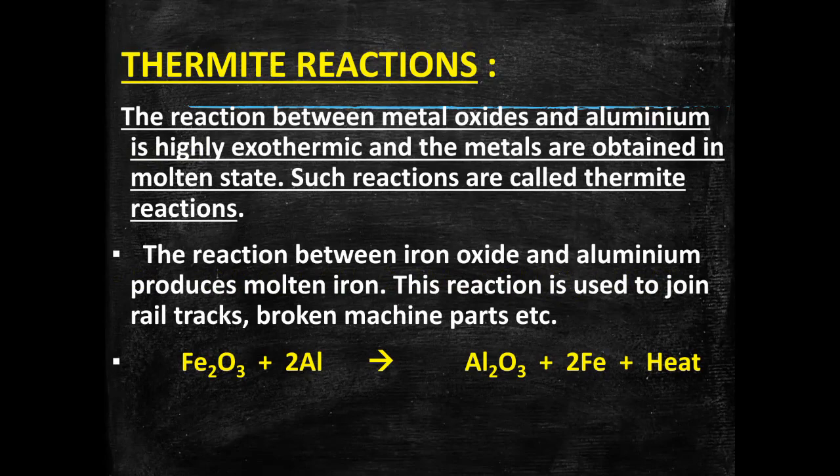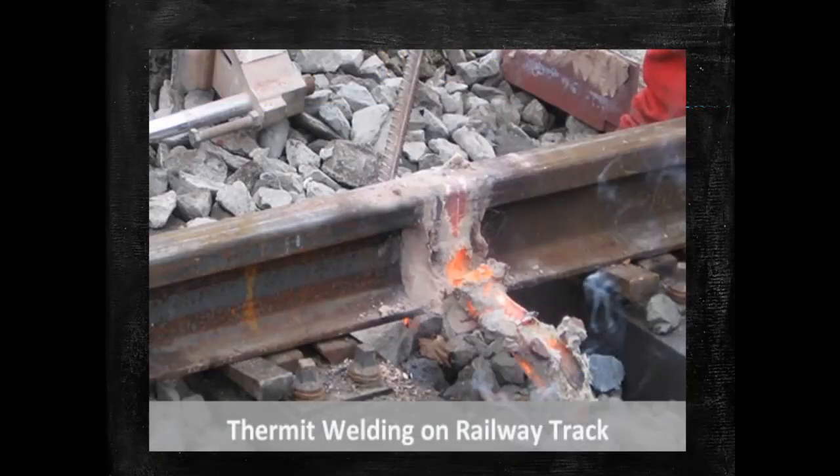Iron oxide when reacted with aluminium produces molten iron. This reaction is used to join rail tracks and broken machine parts. The reaction is as follows: Fe2O3 + 2Al gives Al2O3 and iron along with a high amount of heat. As you can see in the picture, thermite welding is being used to repair the crack on the railway tracks.